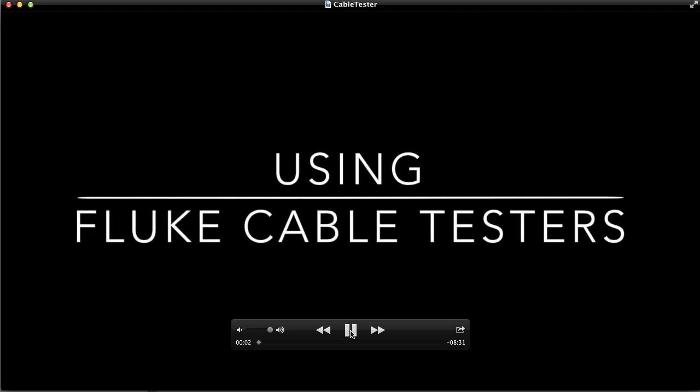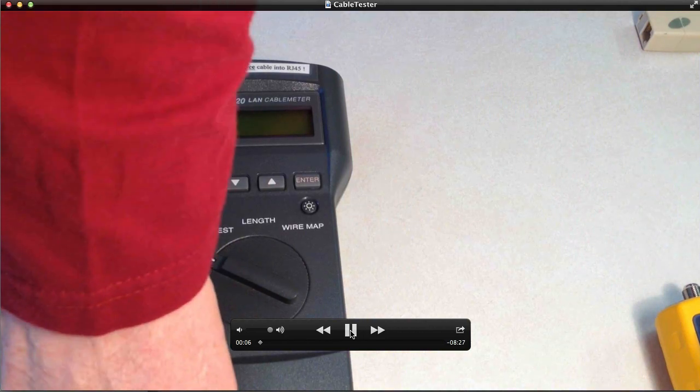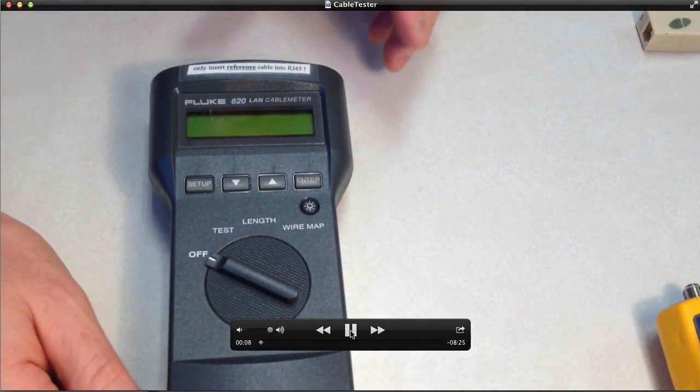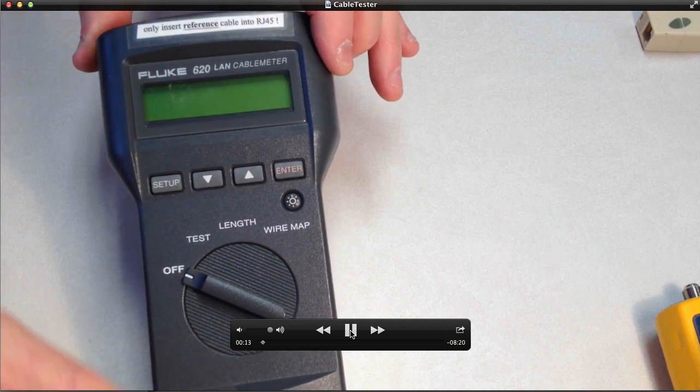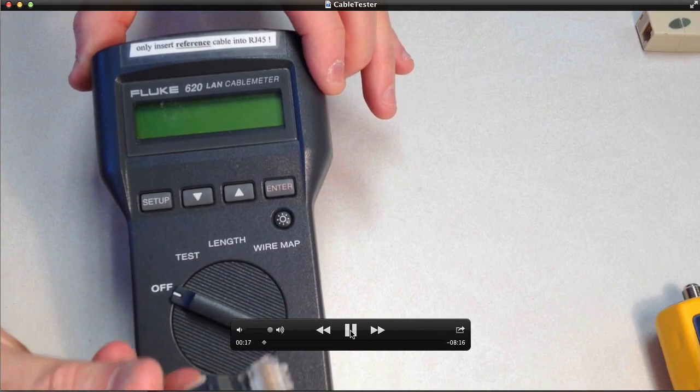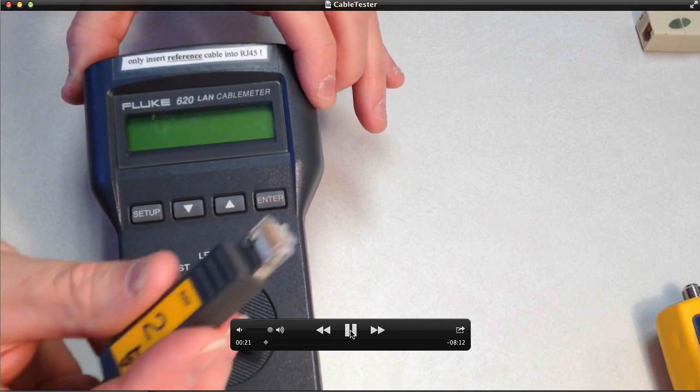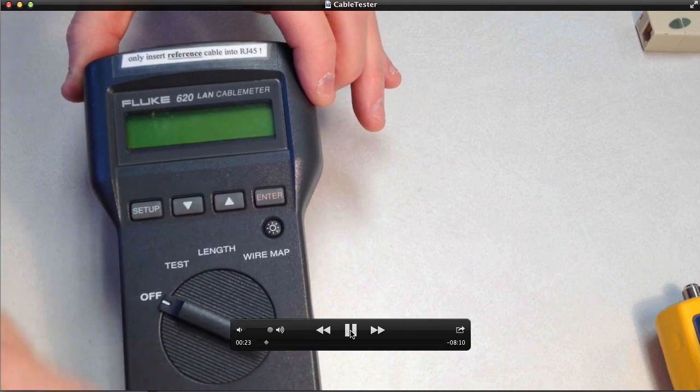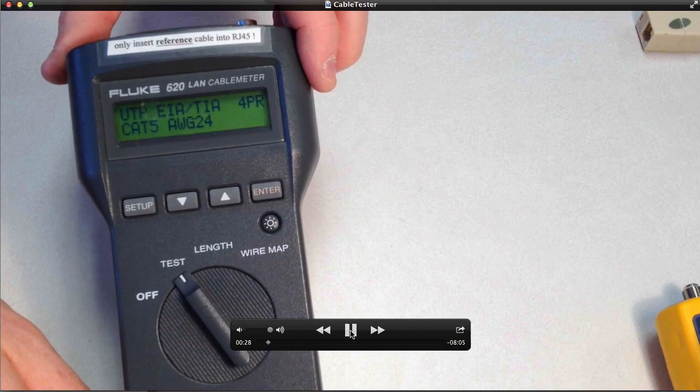We're going to use two different styles of Fluke cable testers. And the first one we're going to use is a Fluke 620 LAN cable meter, which is an older style. Probably we've got this about five years ago. And you can buy some accessories, which are little plugs at the end, each with a number, which can help you identify wiring errors in cables. So we're just going to put this to test.